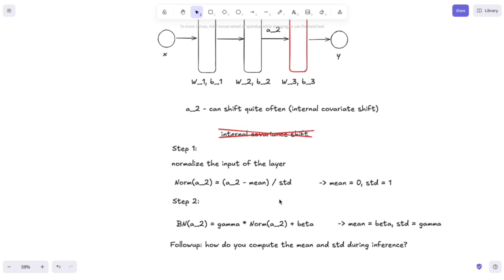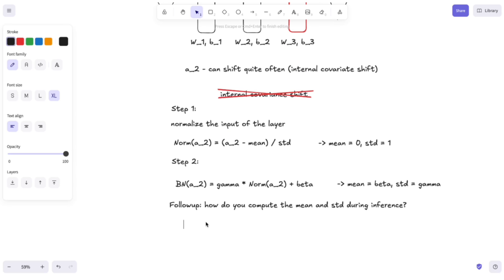Because, for instance, if you serve only one sample to the neural network, then you can't compute the mean and the standard deviation of that batch because it contains only one sample. So what batch normalization does to solve this problem during training is to compute a running average for the mean and standard deviation, similarly to momentum in gradient descent.